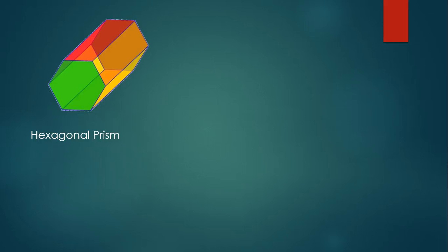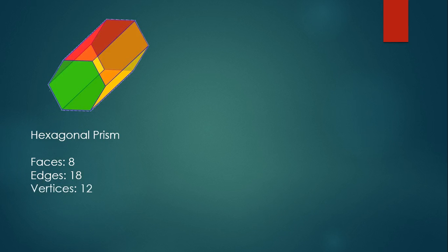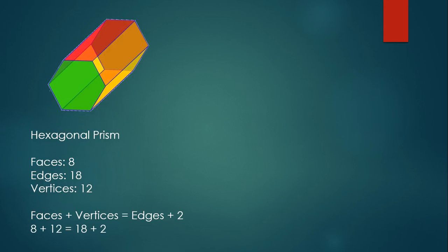Let's see if we can verify for some other shapes. Here's a hexagonal prism. It has 8 faces, 18 edges, and 12 vertices. The number of faces, 8, plus the number of vertices, 12, is 20. And the number of edges plus 2, 18 plus 2, is also 20. So we can see that Euler's Theorem is verified for this hexagonal prism.